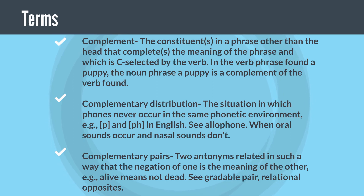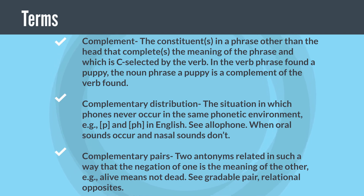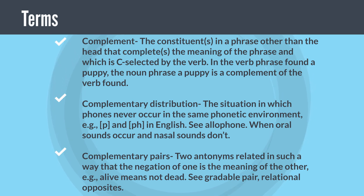Complementary pairs: two antonyms related in such a way that the negation of one is the meaning of the other. Example: 'alive' means 'not dead.' See also: gradable pair, relational opposites.